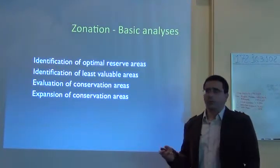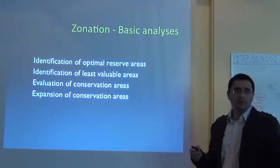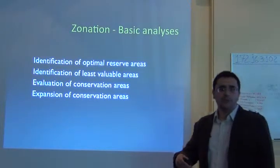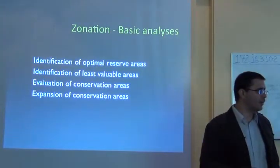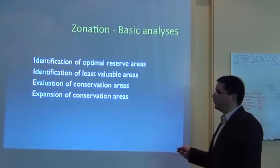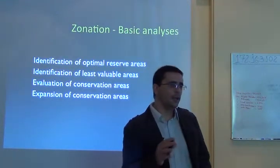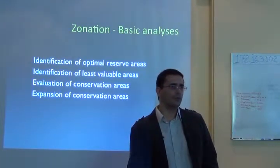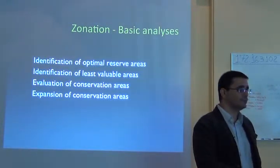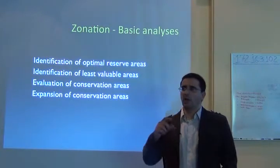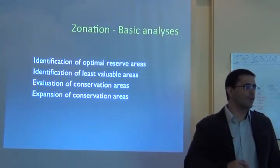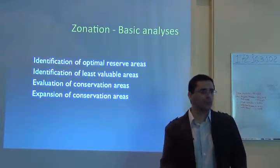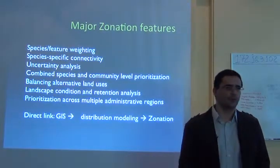The basic applications of Zonation include: identification of optimal reserve areas — where to invest money for building reserves; identification of least valuable areas — places where you definitely don't want to spend money on biodiversity protection; and evaluation of existing conservation areas through a kind of gap analysis. You can include existing protected areas in the analysis, run it with and without them to see how much distribution they are currently protecting, and then propose new places for species conservation.